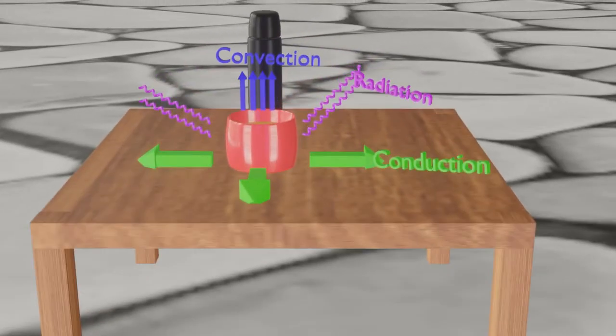On the other hand, convection can happen without direct contact. For example, when you are sitting near a heater you start feeling warm, this is due to convection.